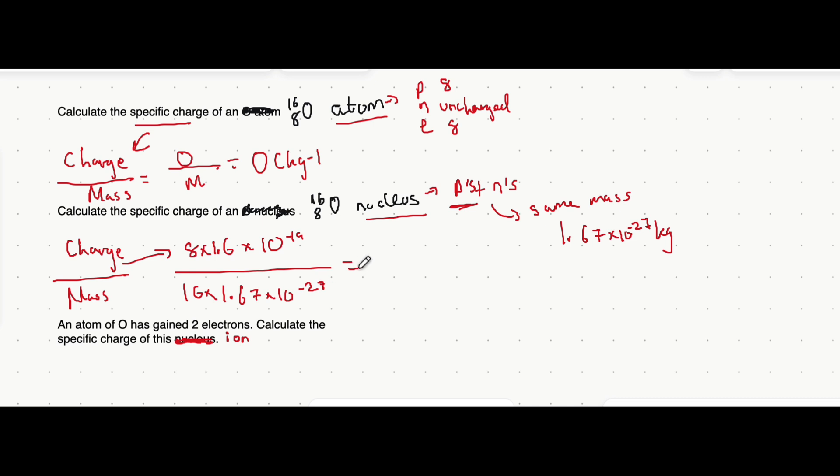Let's put that into a calculator and see what we get. So, 16 times 1.67, and that will give you 4.8 times 10 to the power of 7. Once again, the units would just be coulombs per kilogram.